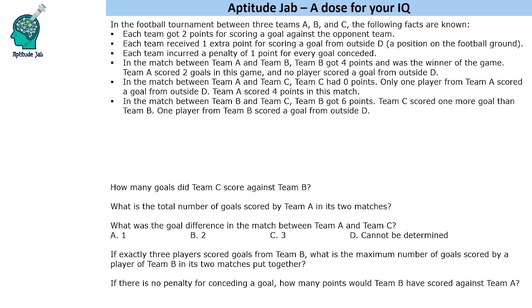Each team got two points for scoring a goal against the opponent team. Each team received one extra point for scoring a goal from outside — that's a bonus point. And the third condition is each team incurred a penalty of one point for every goal conceded.